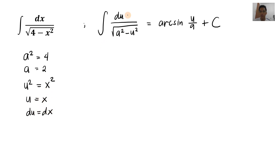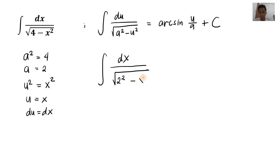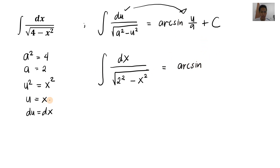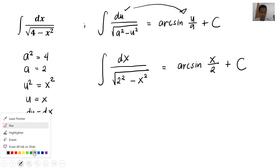We will substitute into our formula: integral of dx over the square root of 2 squared minus x squared. Walang nagbago sa ating expression — walang nagdagdag na constant, so we don't need a balancing constant. We can proceed to the formula. So the final answer is arcsin(x/2) plus C.